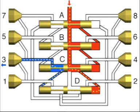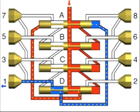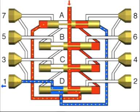In phase 4, piston D opened the junction channel to the left-hand end of piston A. The lubricant flowing in moves piston A to the right, causing the lubricant quantity to be dispensed to outlet 1.